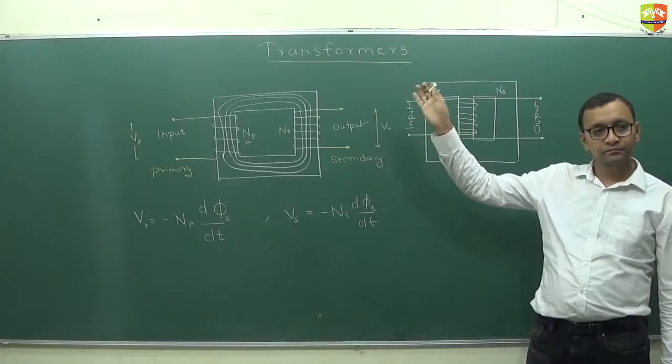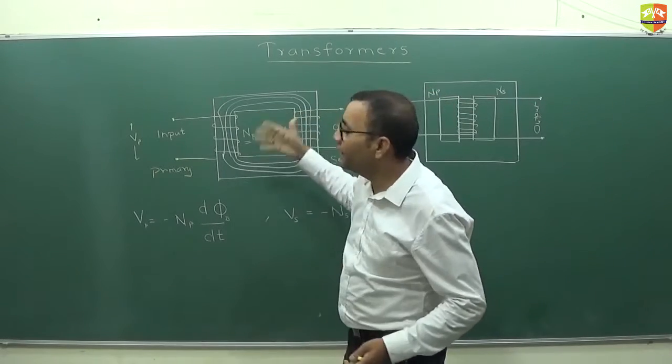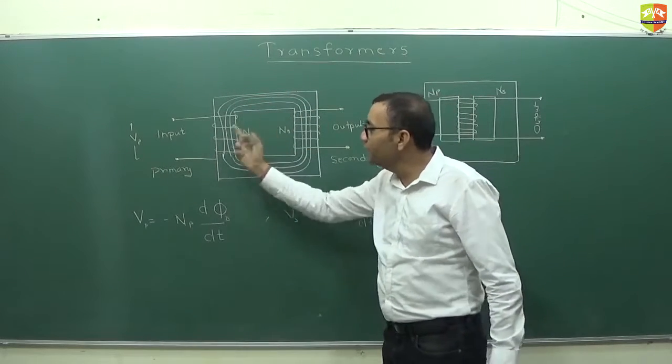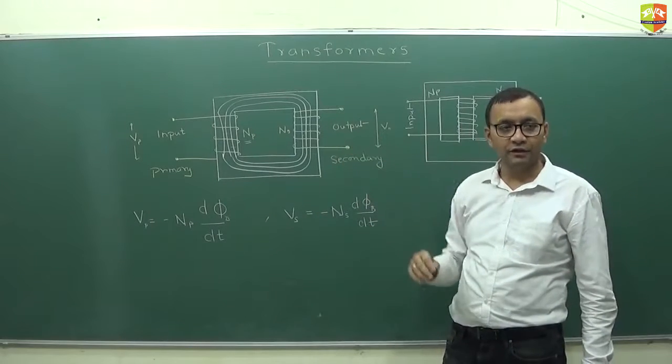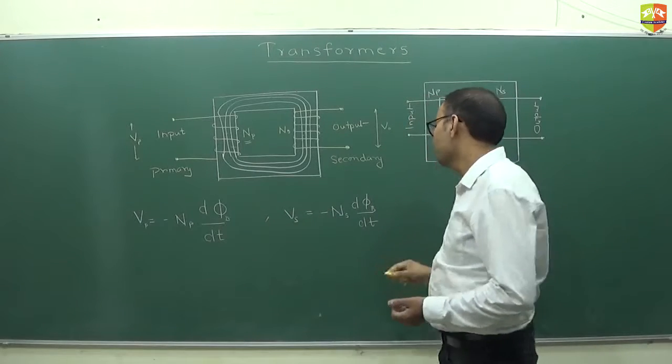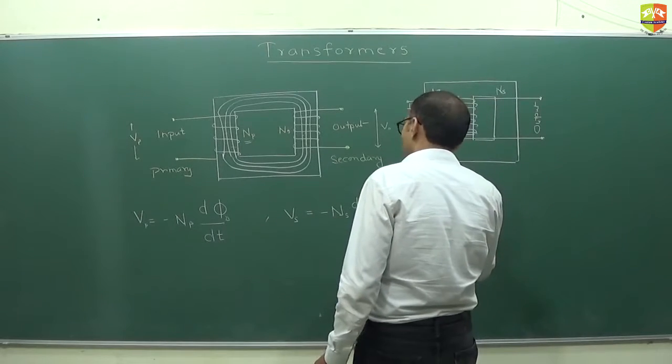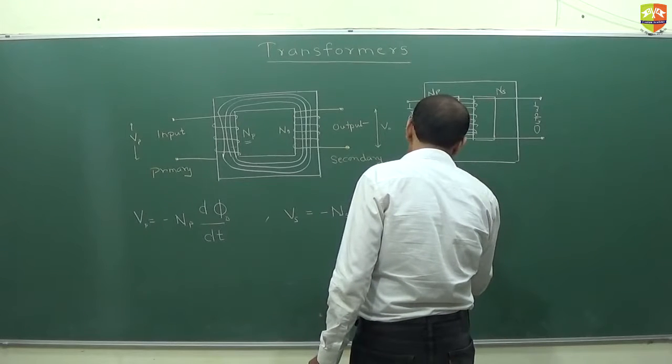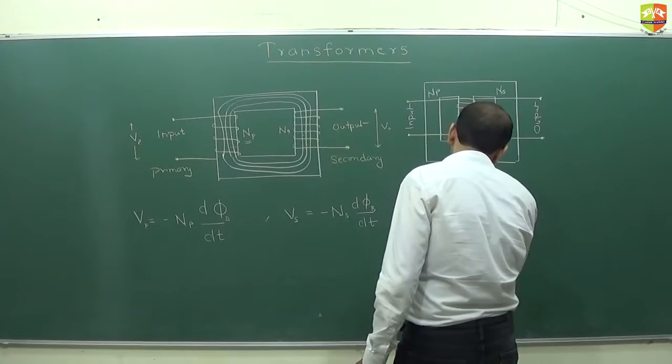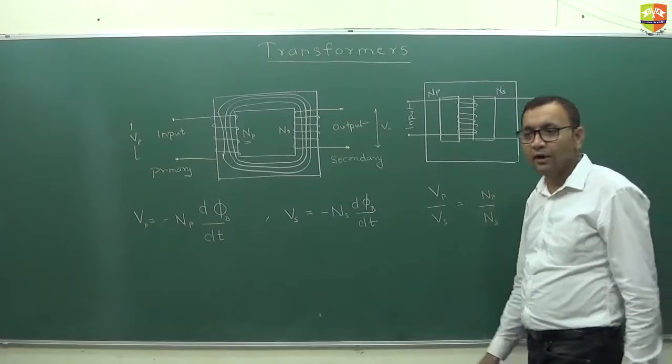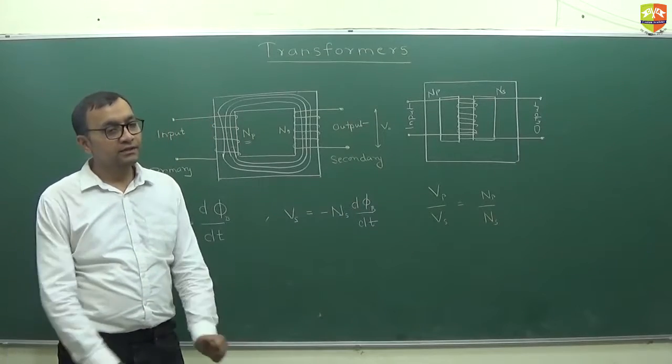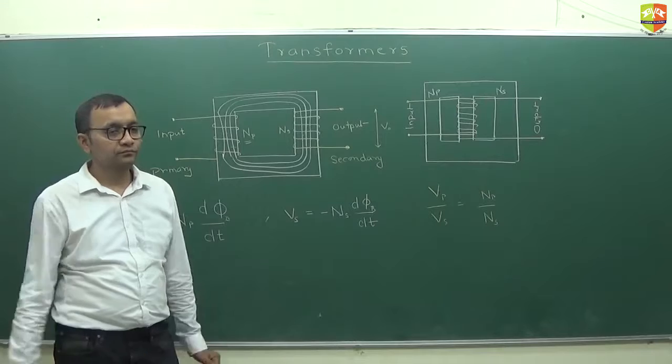Rate of change of flux should be same. See, if you just remove primary and secondary coils, d phi by dt will be same everywhere. Now depending on how many turns you wrap it around, EMF will be different. Because number of turns is also coming into the equation. So if you just divide VP with VS, you'll get this equal to NP by NS. So voltage in primary divided by voltage in secondary is equal to number of turns in primary divided by number of turns in secondary.